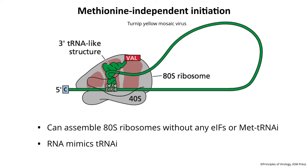There's another cool example in turnip yellow mosaic virus — again methionine-independent initiation, but this time the tRNA-like structure forms at the 3' end of the viral RNA and is actually charged with valine. This structure sits on the initiation site, which is a GUG codon close to an AUG, so the protein begins with a valine. Two cases where viral RNAs mimic tRNAs.